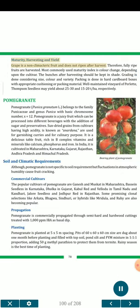Maturity, Harvesting and Yield: Grape is a non-climacteric fruit and does not ripen after harvest. Therefore, fully ripe fruits are harvested. The most commonly used maturity index is color change, depending upon the cultivar. Bunches after harvesting should be kept in shade. Grading is done considering size, color and variety. Packing is done in hard cardboard boxes with appropriate cushioning material. A well-maintained vineyard of Perlette and Thompson Seedless may yield about 25–30 t and 15–20 t per hectare respectively.